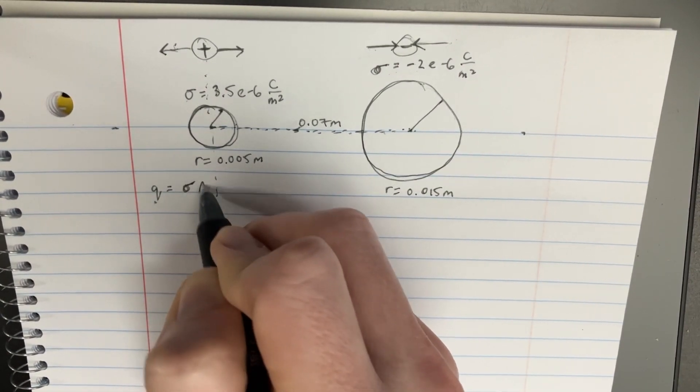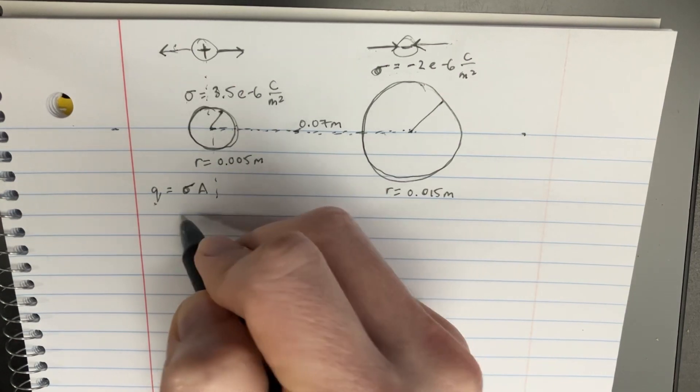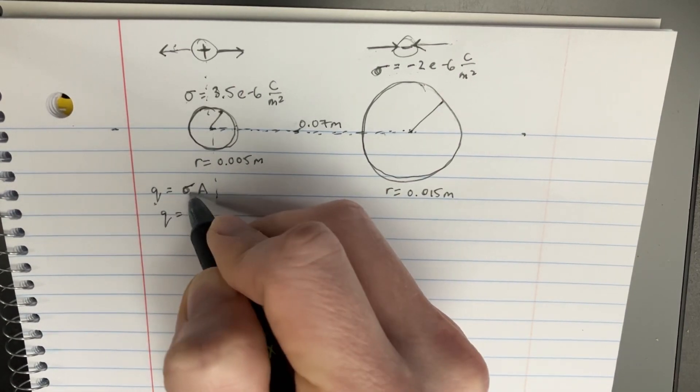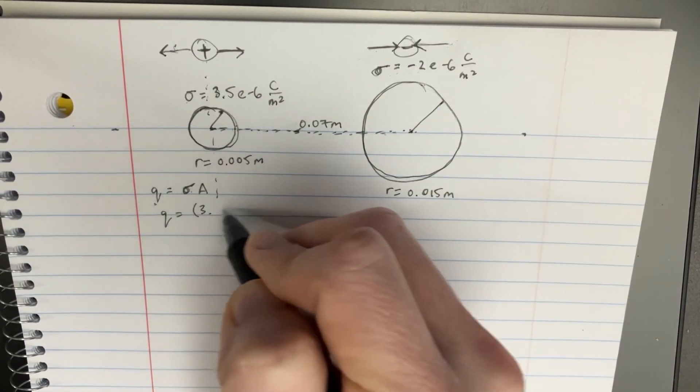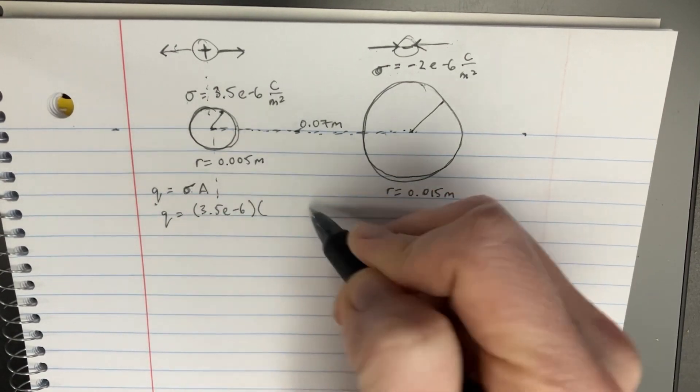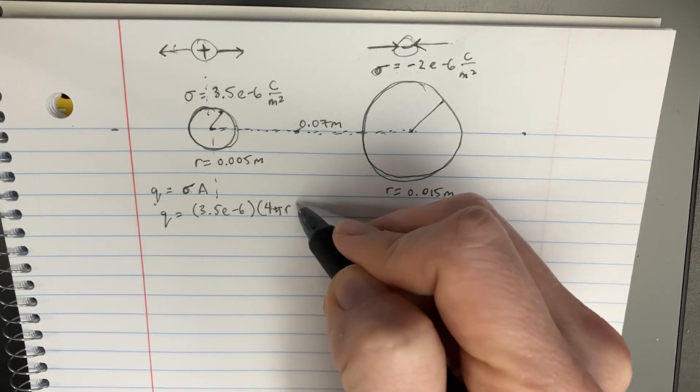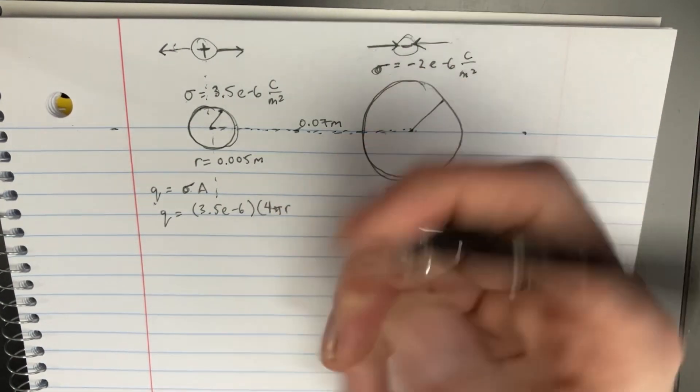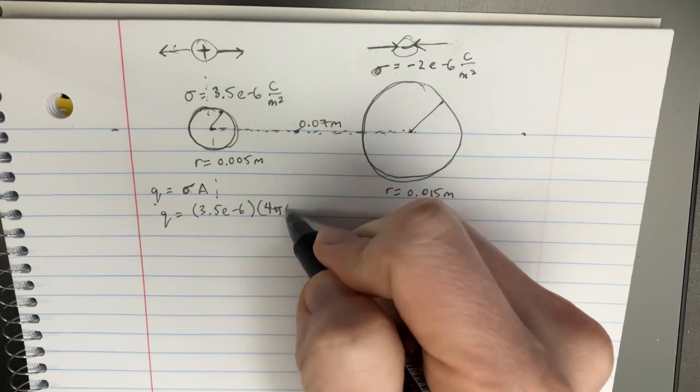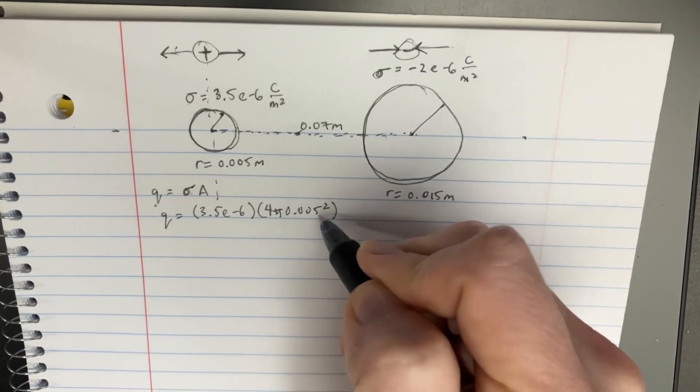Well, q is going to be equal to the density times the area. And in this case, the q would be equal to 3.5 e to the negative 6 times the area of the shell, which is 4 pi r squared. And the r, in this case, is going to be 0.005 squared.